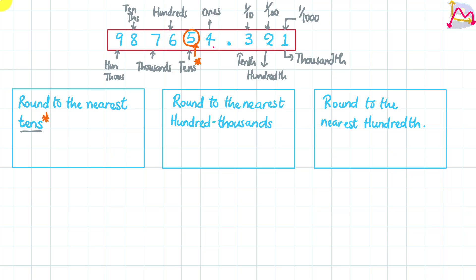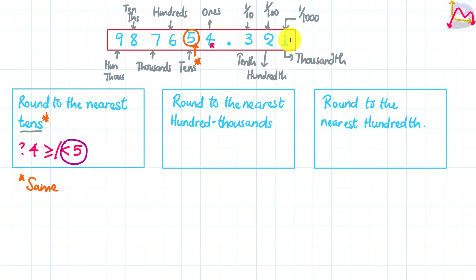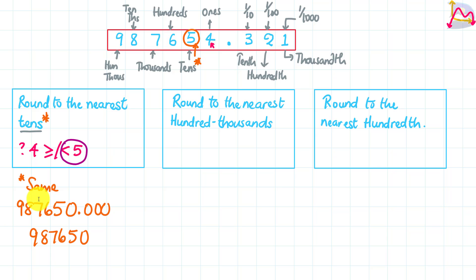We ask: is the digit four greater than or equal to five, or is it less than five? In this case, four is less than five — therefore our target digit five will remain the same, and all digits after the tens place will become zero. Our final answer will be 987,650.000, or simply 987,650.